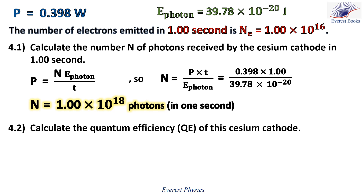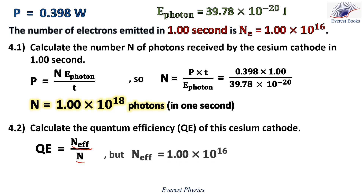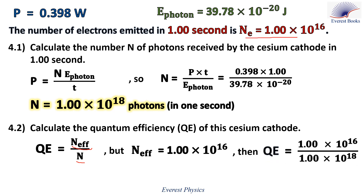Part 4.2: calculate the quantum efficiency of this cesium cathode. The quantum efficiency is the number of effective photons over the number of photons received during the same time. N equals 1 times 10 to the power 18 photons per second, and the number of effective photons equals the number of electrons emitted per second, which is 1 times 10 to the power 16. Therefore, the quantum efficiency equals 0.01, which is equal to 1%.